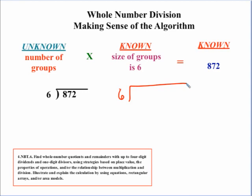So, this is really 800 plus 70 plus 2. Well, how many 6s can I get out of 800? Well, I'm dealing with hundreds here. So, I can get 100 groups of 6, which would be 600. And I have 200 left over. Plus the 70 over here, which gives me 270.